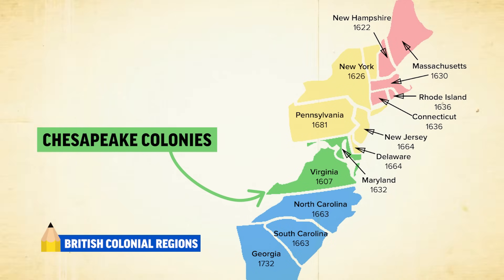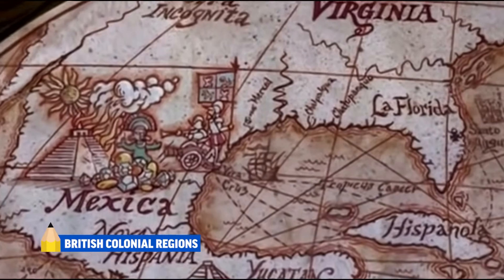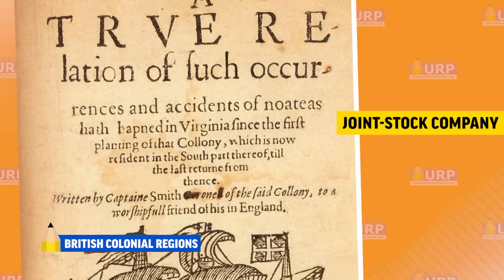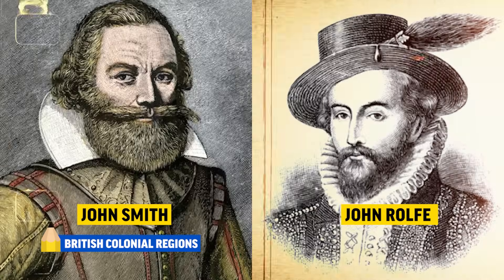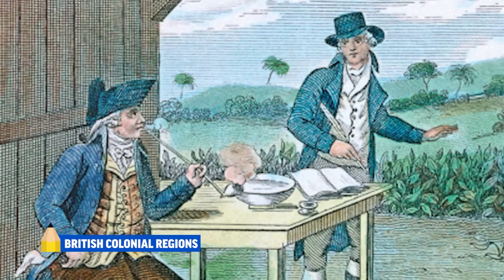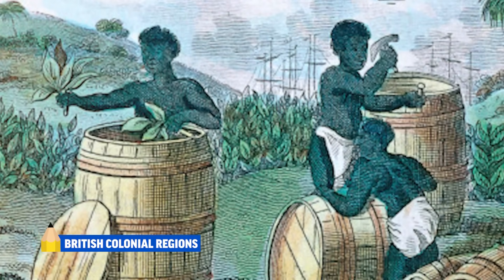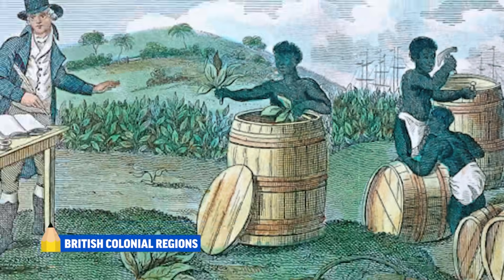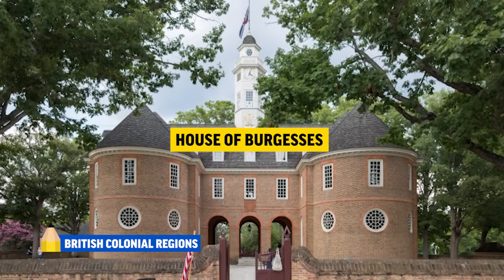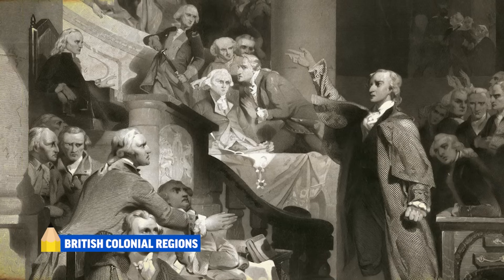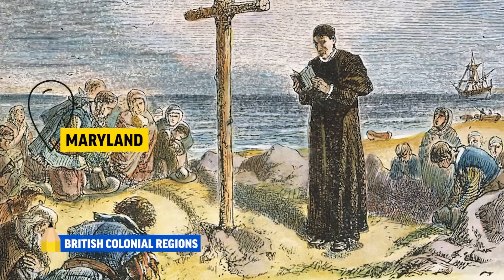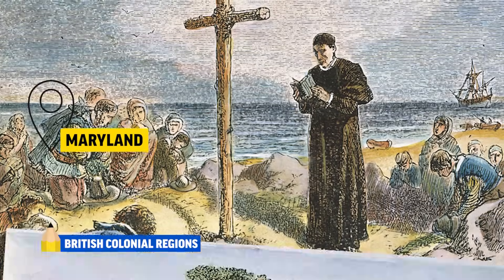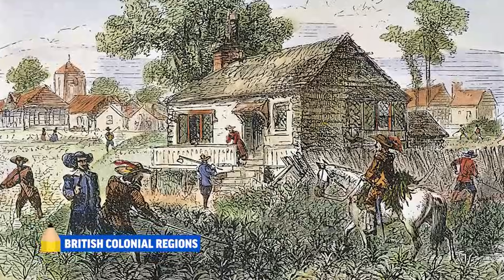Next, let's look at the British colonial regions. First, the Chesapeake, which included Virginia and Maryland. The first British settlers arrived at Jamestown seeking profit. They were funded by a joint stock company, and after experiencing multiple setbacks, leaders like John Smith and John Rolfe helped the colony thrive. They made massive profits by growing tobacco on plantations, which led to the growth of the planter class and a reliance on slave labor. The first elected legislative body, called the House of Burgesses, was founded in Virginia in 1619. Maryland was founded as a refuge for Catholics by Lord Baltimore, and like Virginia, its economy was based on tobacco farming and slave labor. Maryland also passed the Act of Toleration, which guaranteed religious freedom for all Christians.